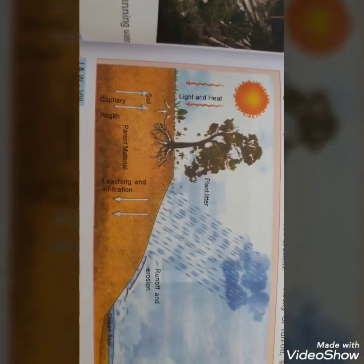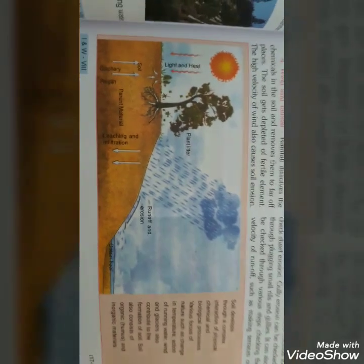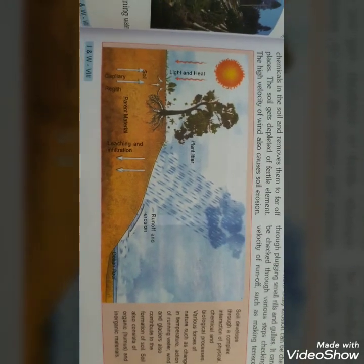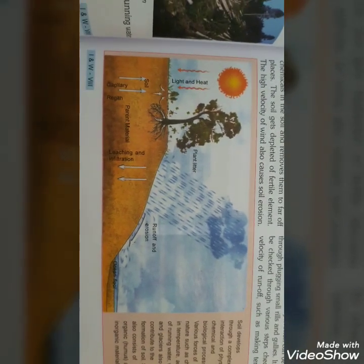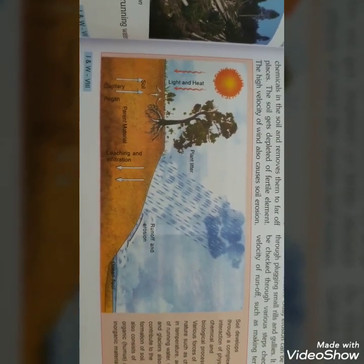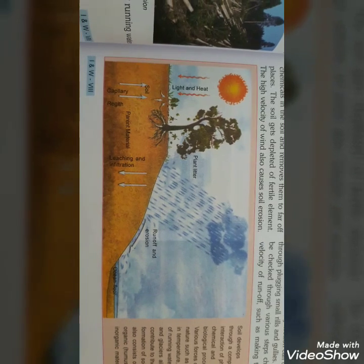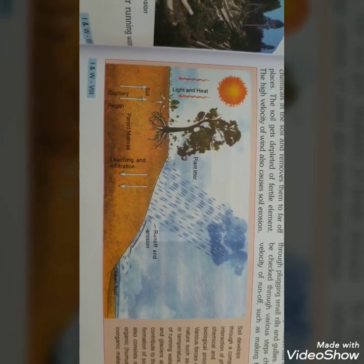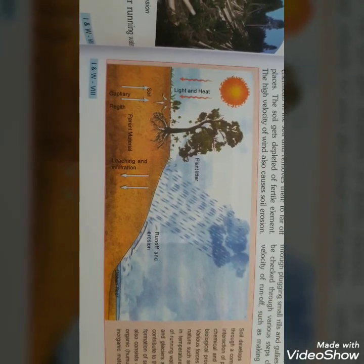This is the diagram of how soil is formed — showing light and heat, plant litter, runoff and erosion, parent material, and soil.